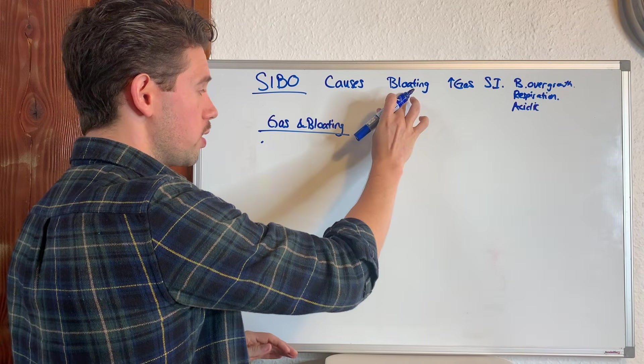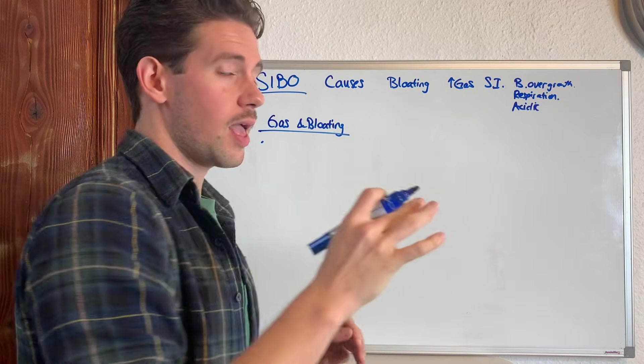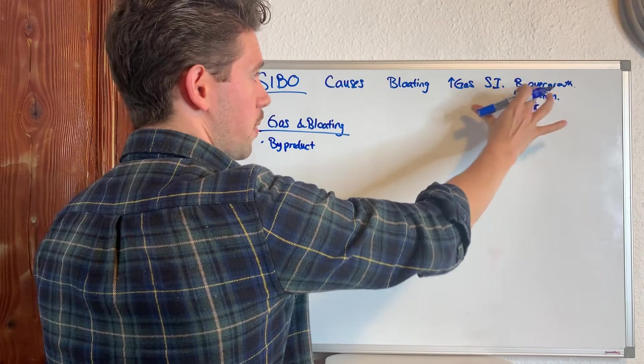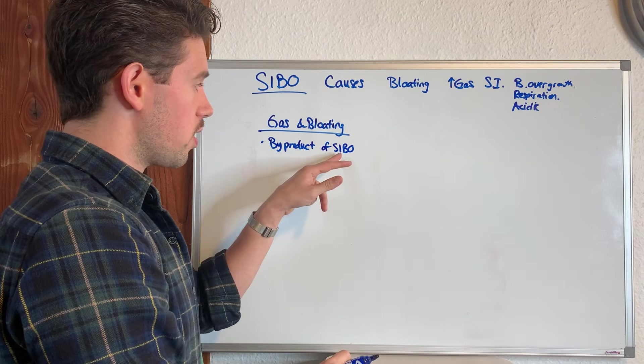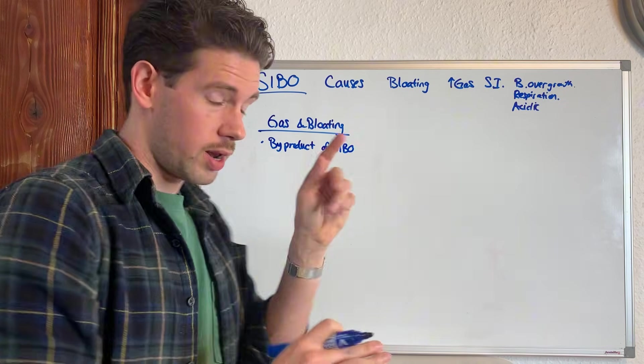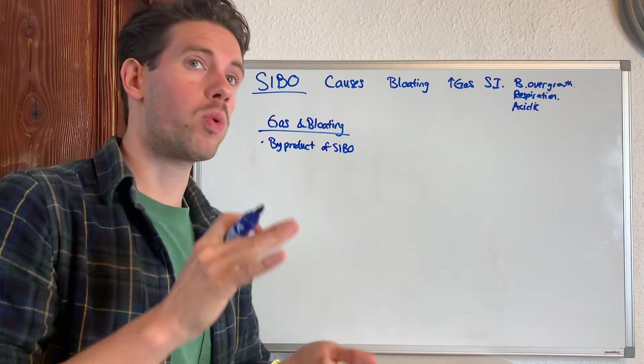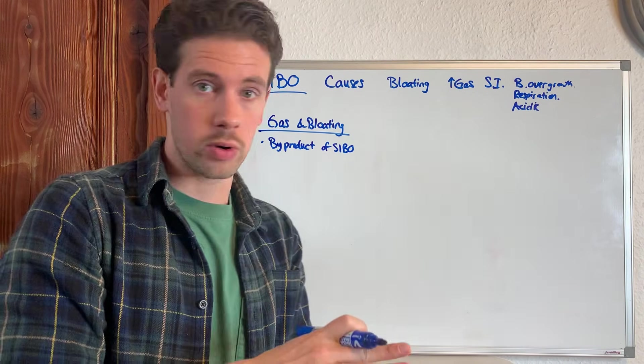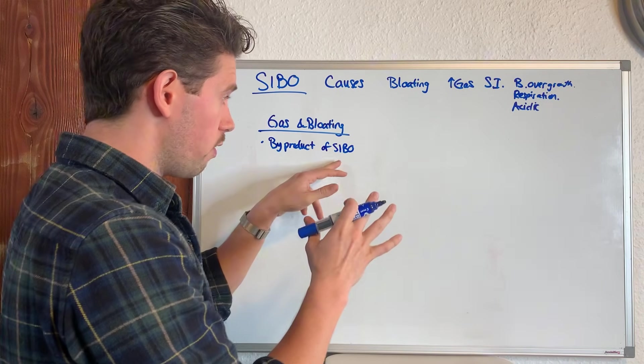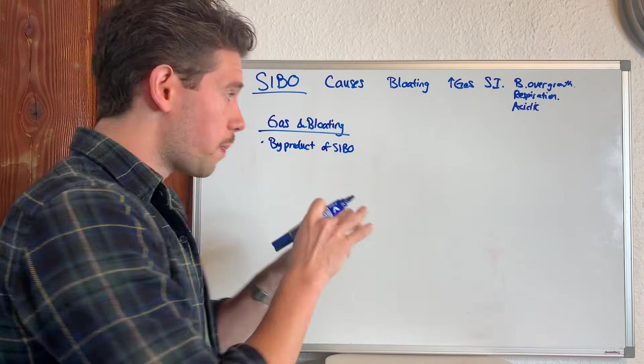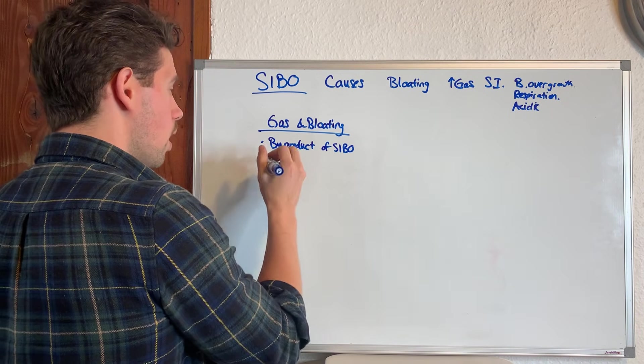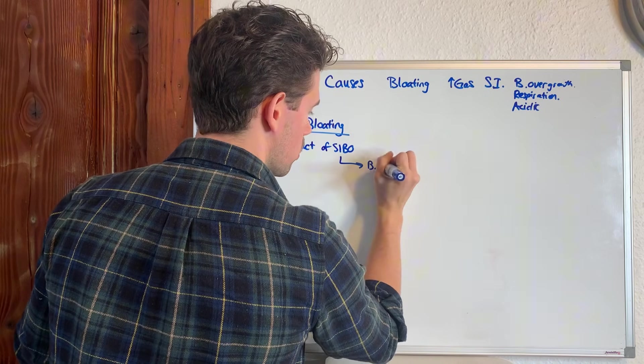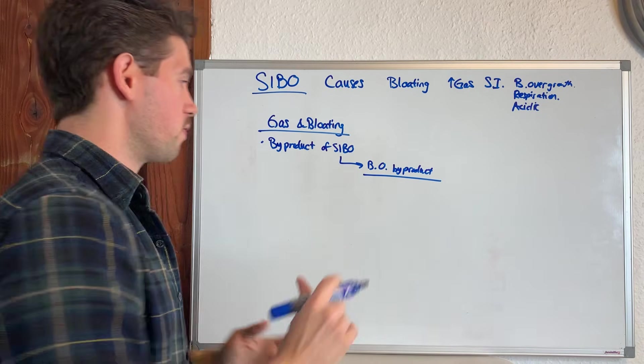So the gas and bloating concern from SIBO is a byproduct, a result from the small intestinal bacterial overgrowth. And so addressing the bacterial overgrowth, here's where a lot of people get stuck is they think, oh well, I need to take an antibacterial type of supplemental compound in order to solve the bacterial overgrowth. No, the bacterial overgrowth is also a byproduct. What is it a byproduct of? Poor digestion. This is the main problem in SIBO.